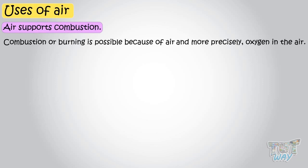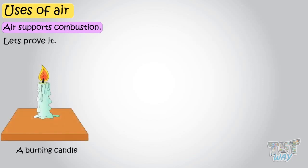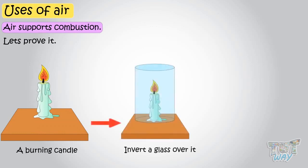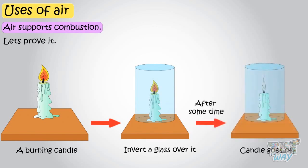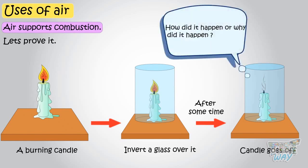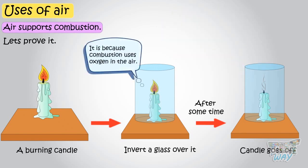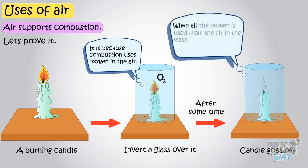Let's see an activity to prove it. Take a burning candle and invert a glass over it, and observe what happens. After some time, the candle will go off on its own. Why did it happen? It is because combustion uses the oxygen in the air. And when all the oxygen is used from the air inside the glass, combustion stops on its own, as there is no oxygen left in the glass.